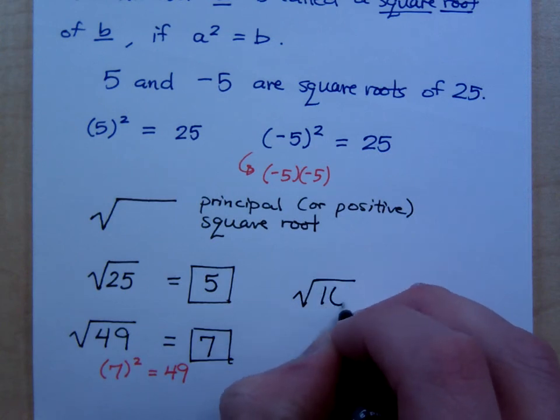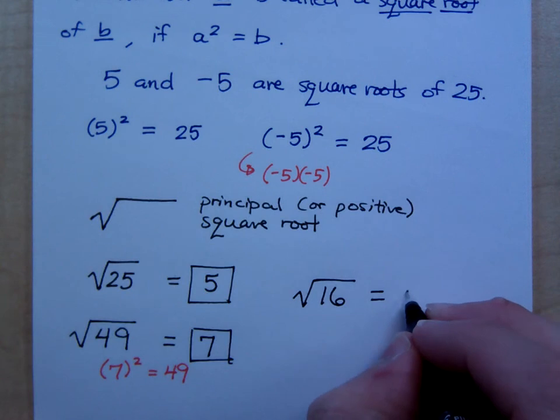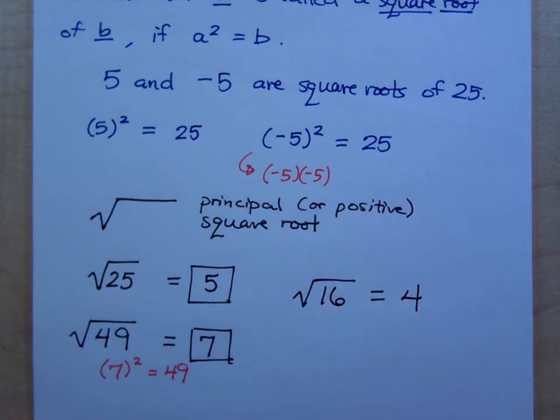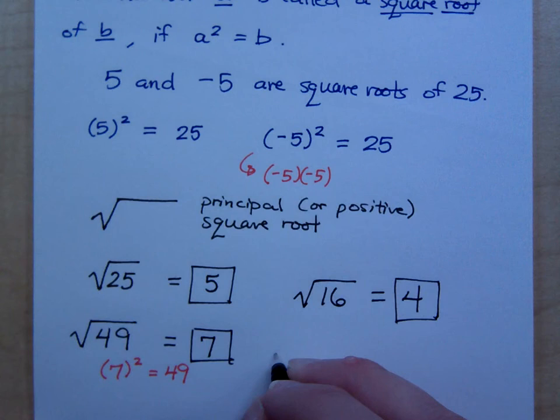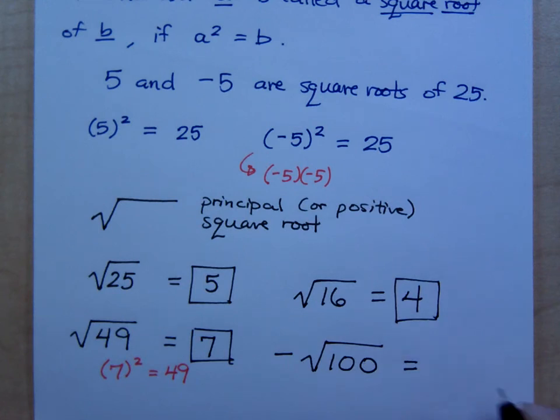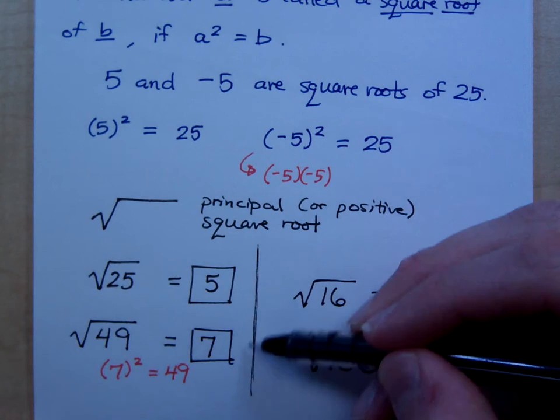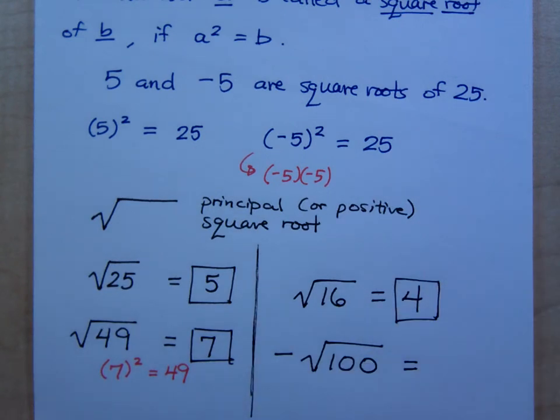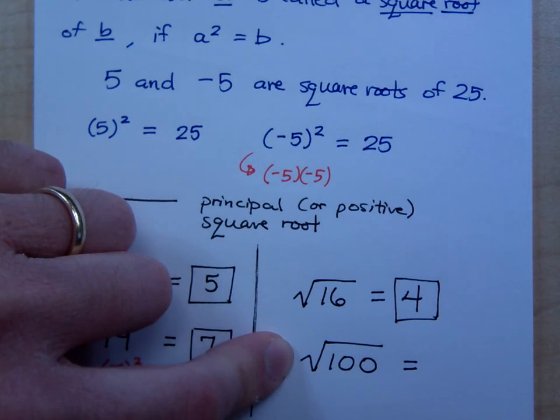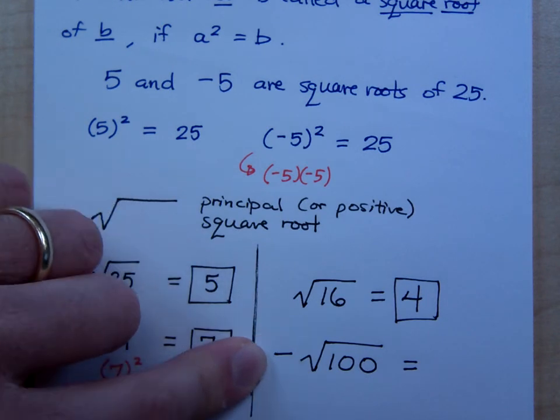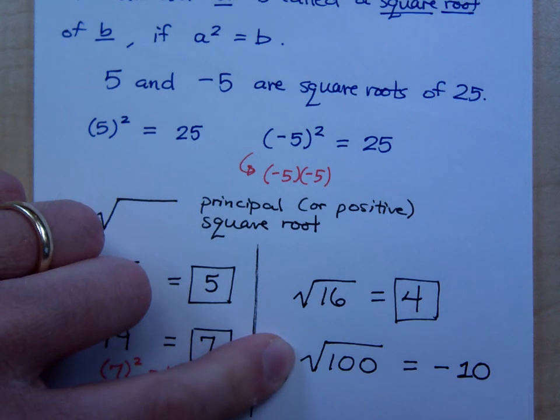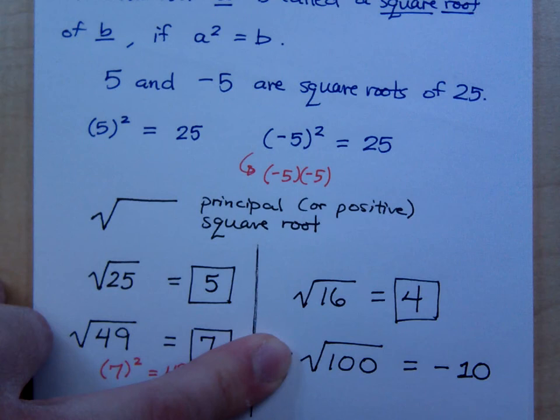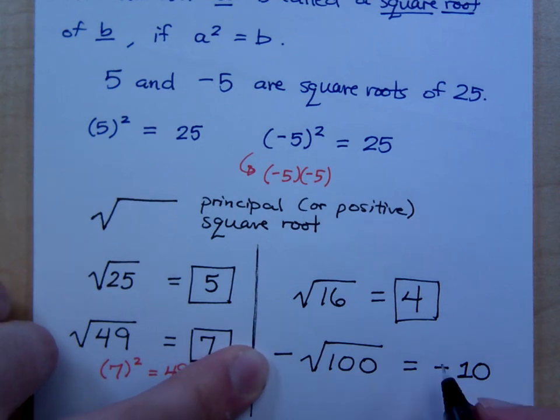So if I say the square root of 16, what is that? We should know that that is just 4. Because what did you square to get 16? 4. What if I put a negative out front like this, and I say negative the square root of 100? What would you say that is? If I have this, you would say 10, right? But if I have a negative outside, that would actually mean negative 10. Because what's the square root of 100? The square root of 100 is 10, but if I multiply that times the negative that's out in front, it would be negative 10.